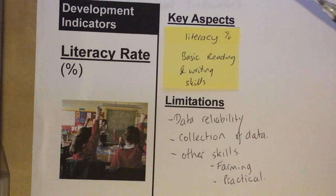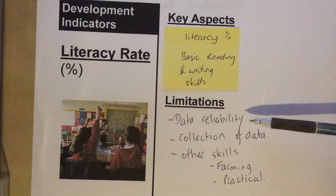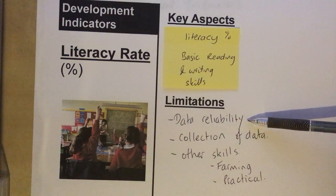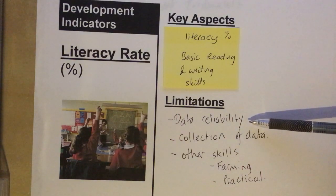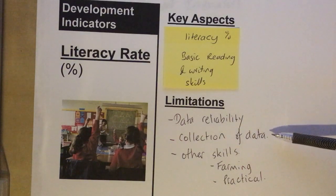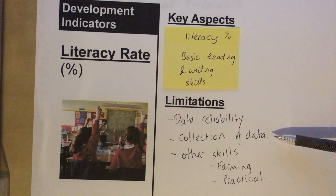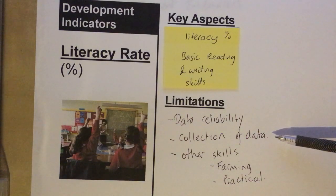Here are some of the problems with this particular indicator. One is the reliability of the data — different governments, as they collect the data, may have different cut-off points of what they consider to be basic reading and writing skills. Another problem is the collection of data, as in some areas — such as conflict areas, squatter settlements, or places with higher levels of migration — it might be more difficult to collect accurate and up-to-date data.